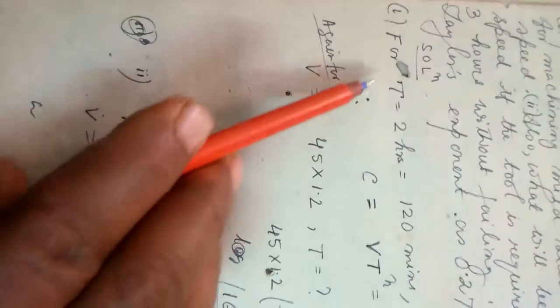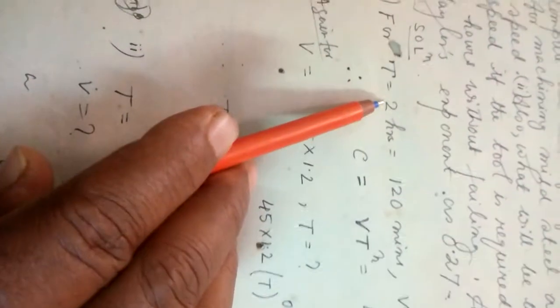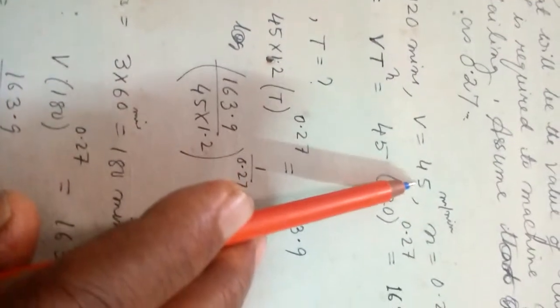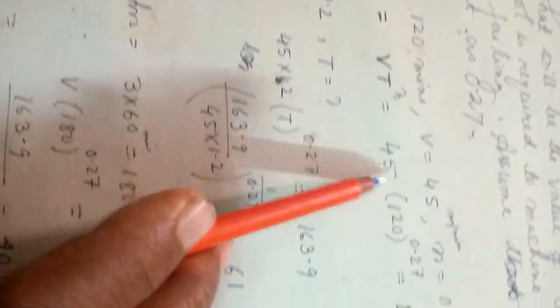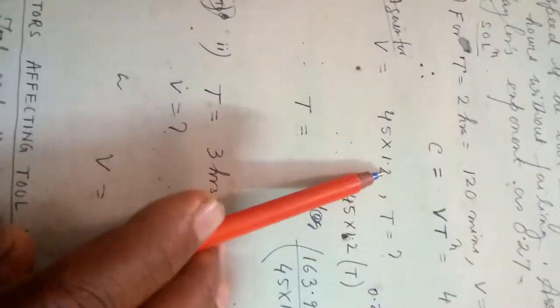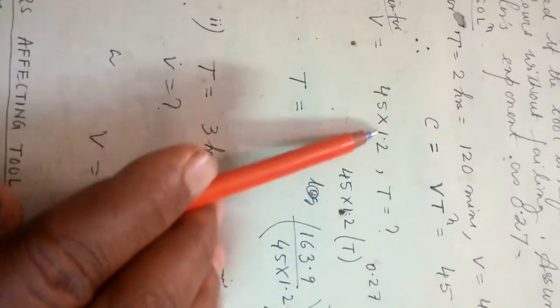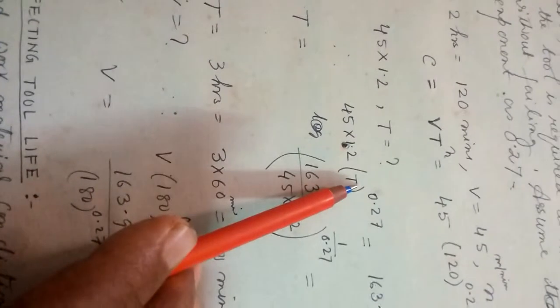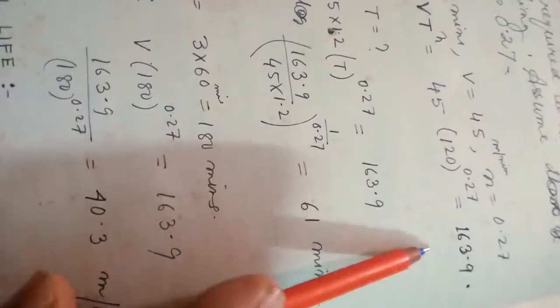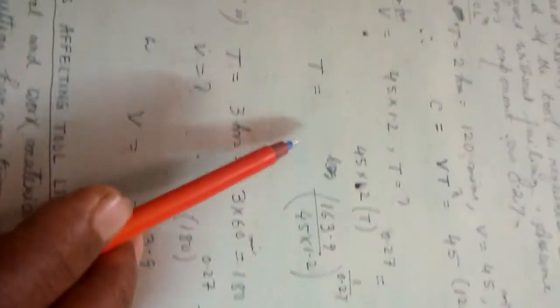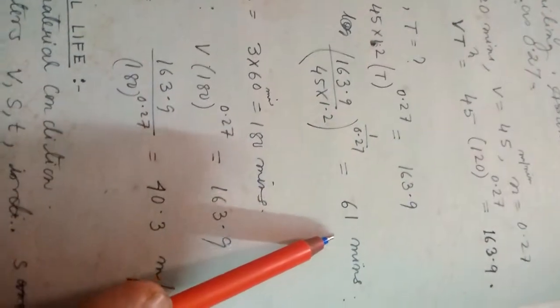For T equals two hours means 120 minutes, V equals 45 meter per minute, n equals 0.27. From here C equals VT to the power n, so C is found out. Now again for V equals 45 times 1.2, 20 percent more, so 45 times 1.2 times T to the power 0.27 equals 163.9, this is C. From here you can easily find out T. It is 61 minutes. Number two.